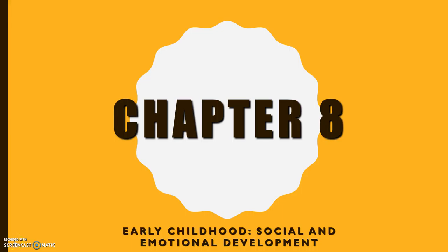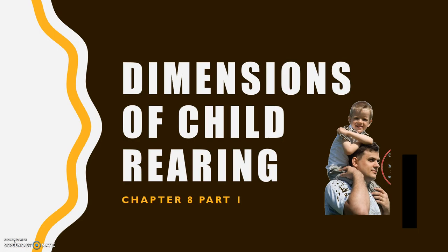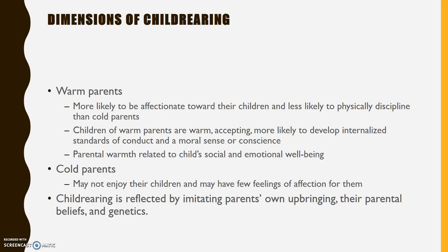Let's dig into Chapter 8, the second section where we're talking about early childhood development. Chapter 8 is going to focus on social and emotional development. One of the first things that's going to affect social and emotional development of children is child rearing — how that child is parented and cared for. Basically, child rearing breaks down into warm and cold parenting.